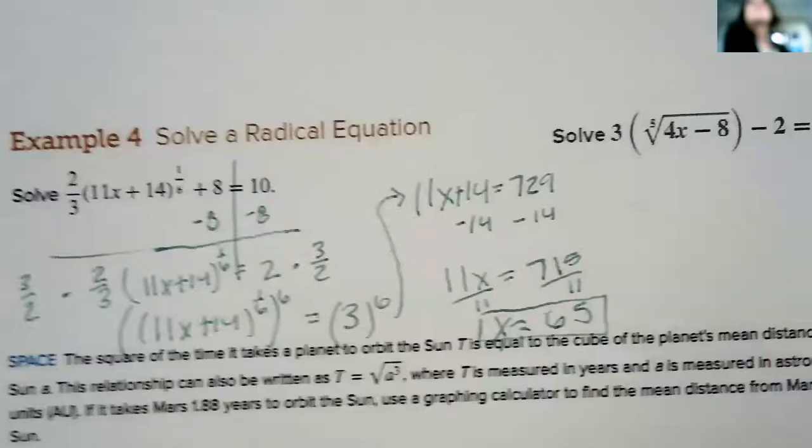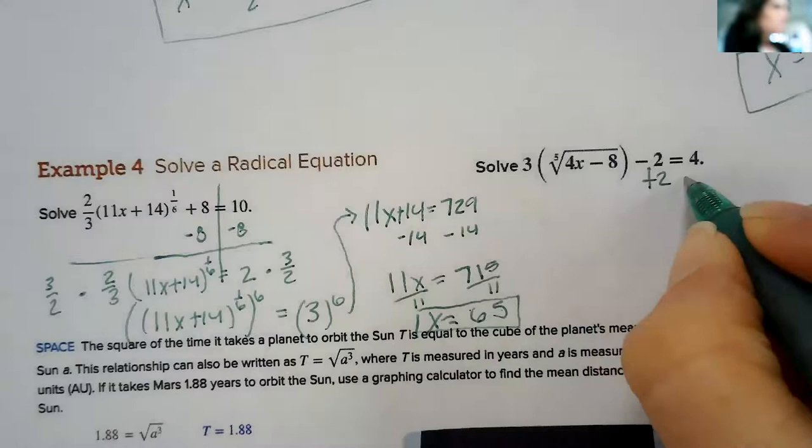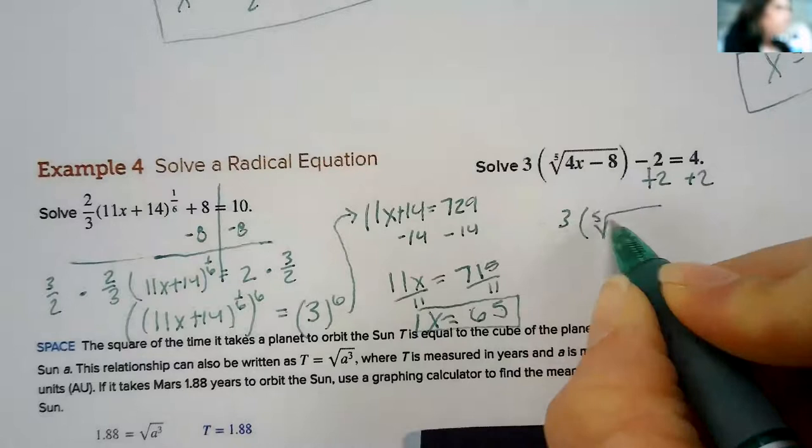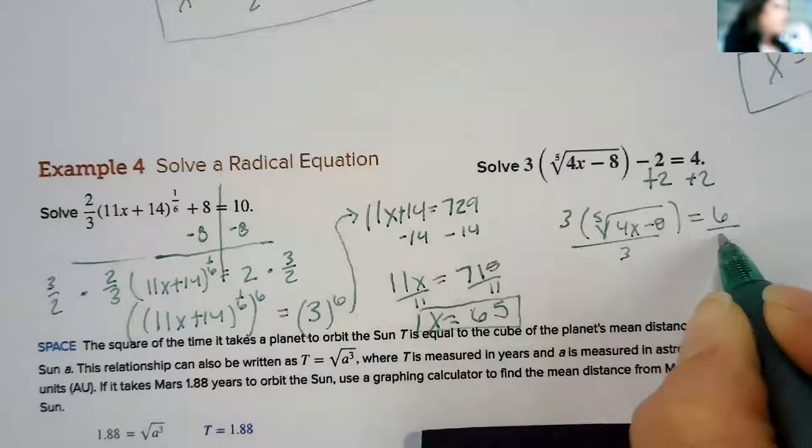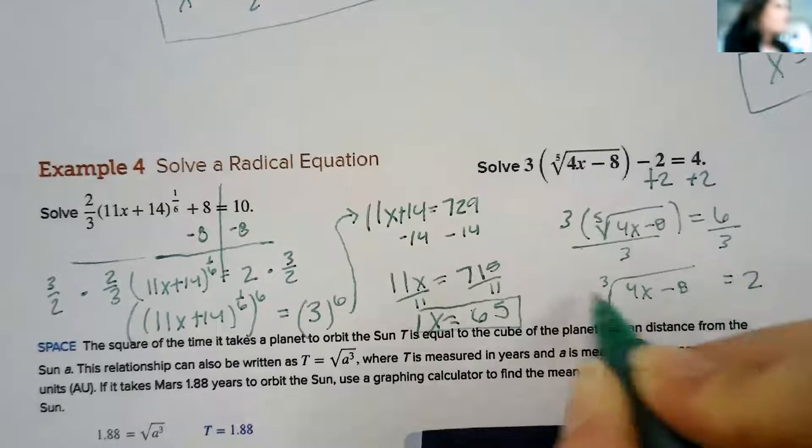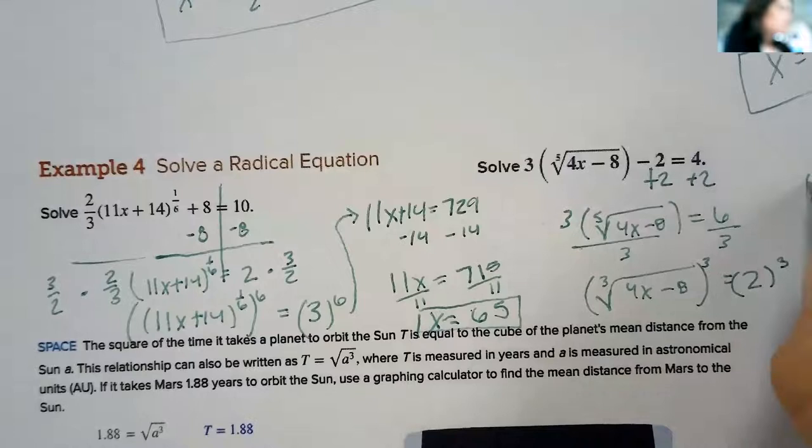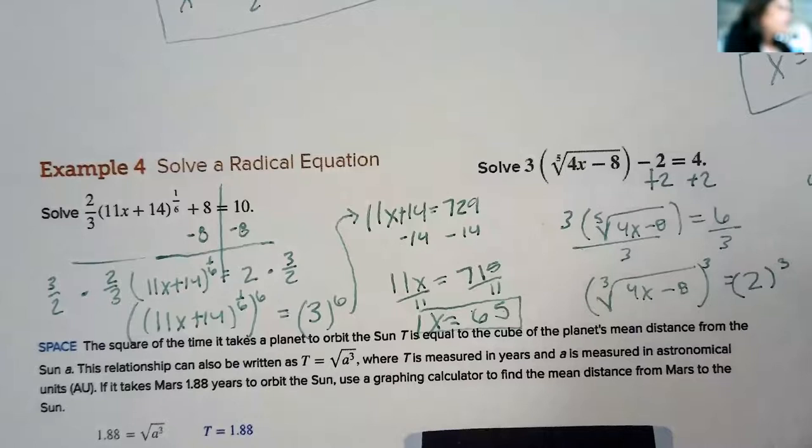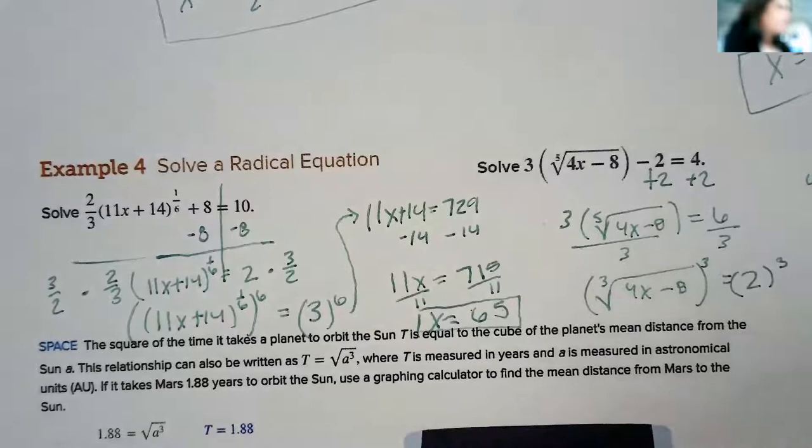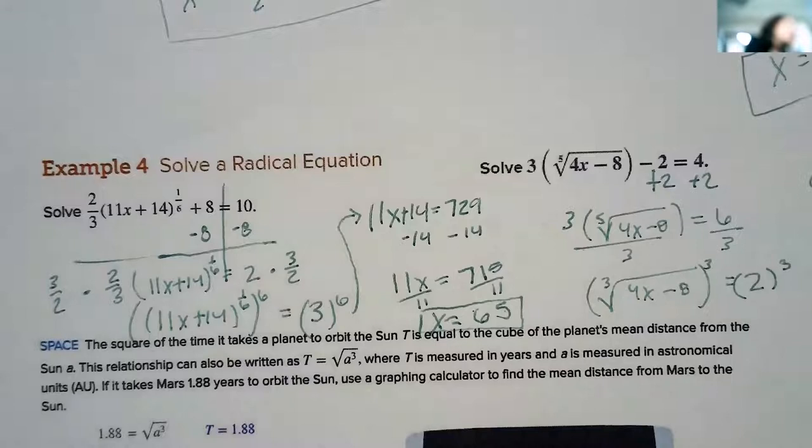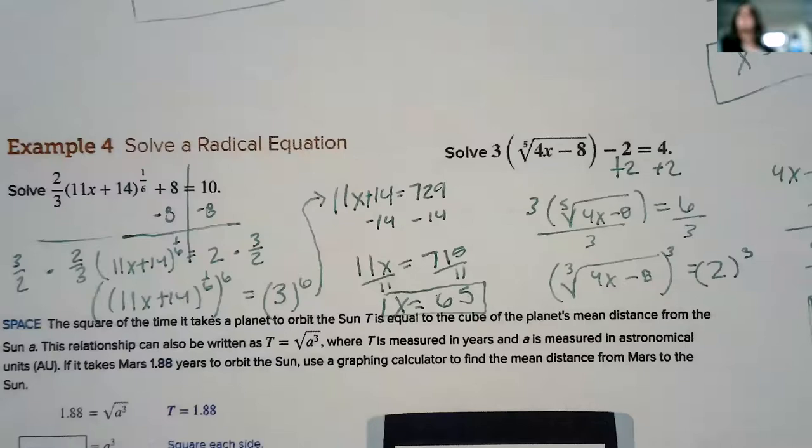Next one, we're starting out similarly. I would add 2 over. It's going to give me 3 times the fifth root of (4x - 8) equals 6. Divide by 3. Fifth root of (4x - 8) equals 2. Then I have to raise each side to the power of 5, so I get 4x minus 8 equals 32. Keep going. 4x equals 40, so x is going to be 10.